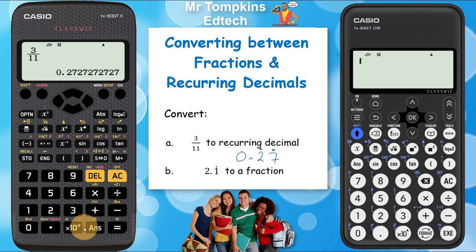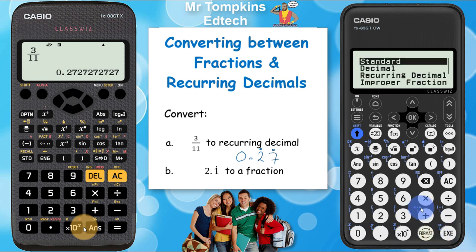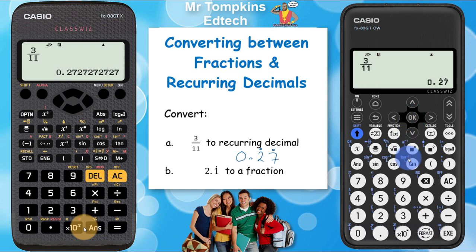On the newer Casio calculator, the same process applies. Press the 3, then the fraction key, then type in 11, then press execute so it appears on the bottom right of the screen. To get it as a recurring decimal, press the format key and go down to the recurring decimal option on the screen and press OK.